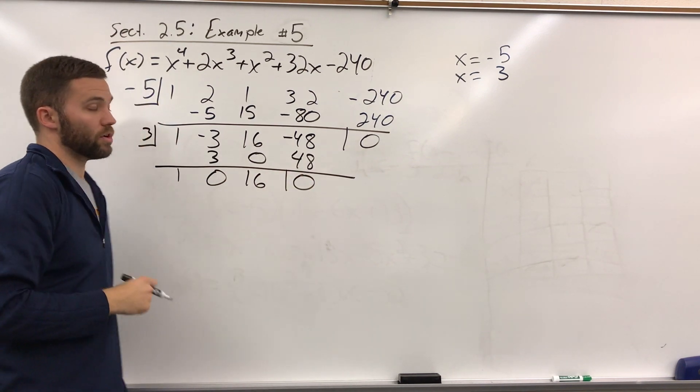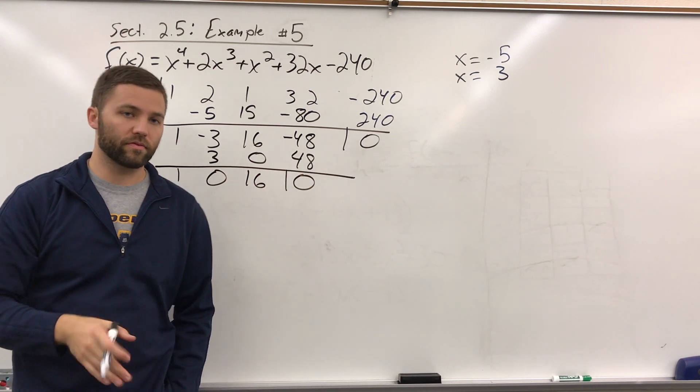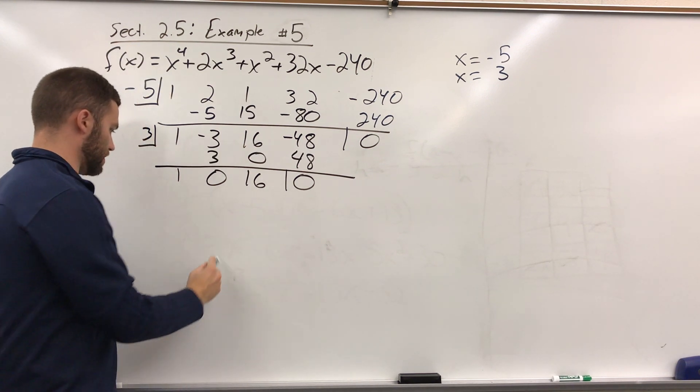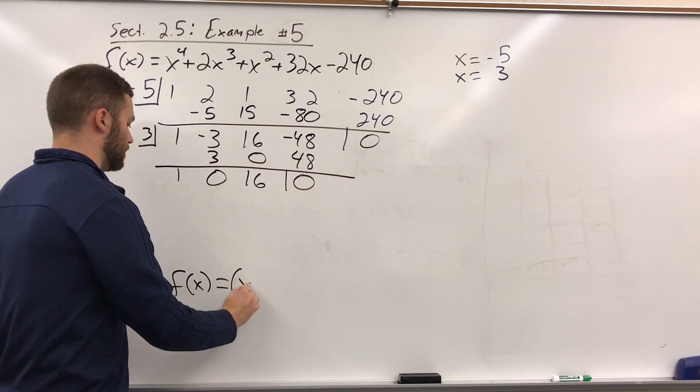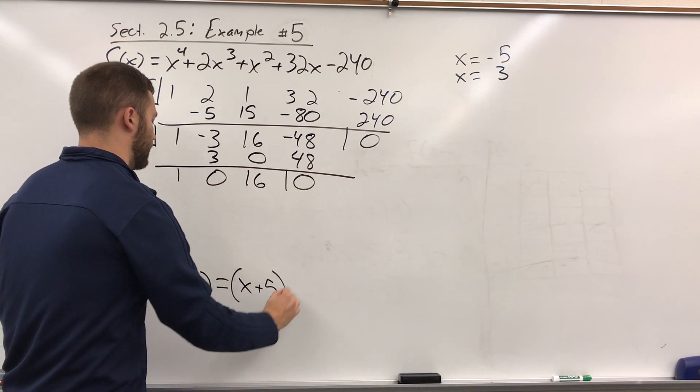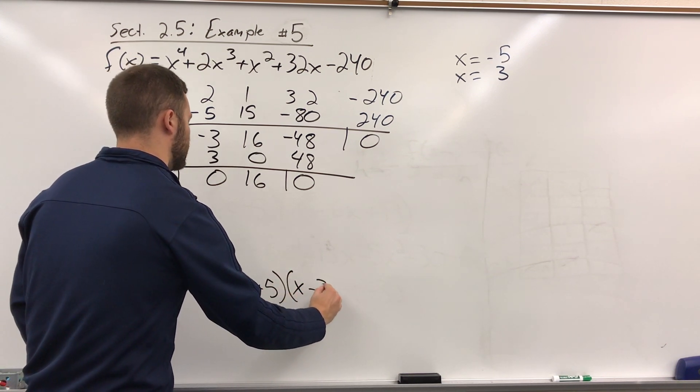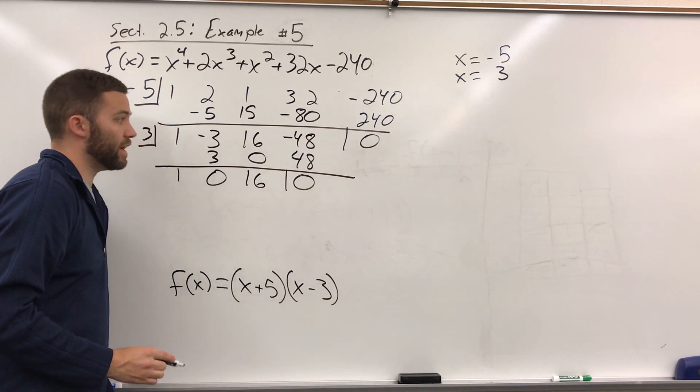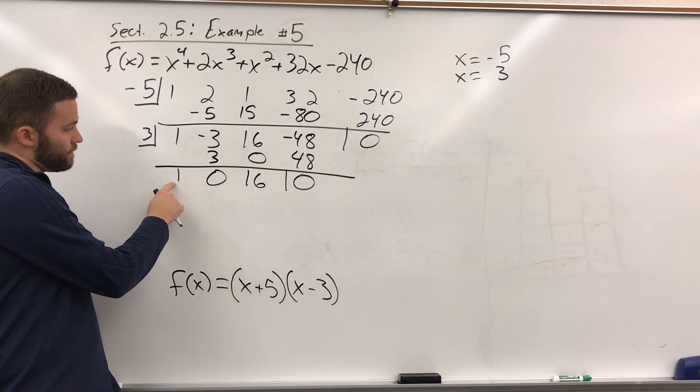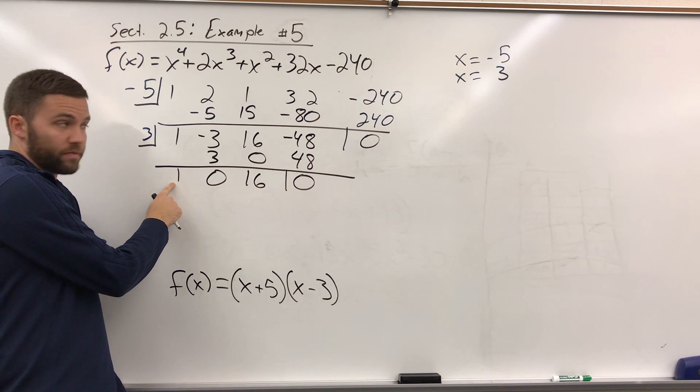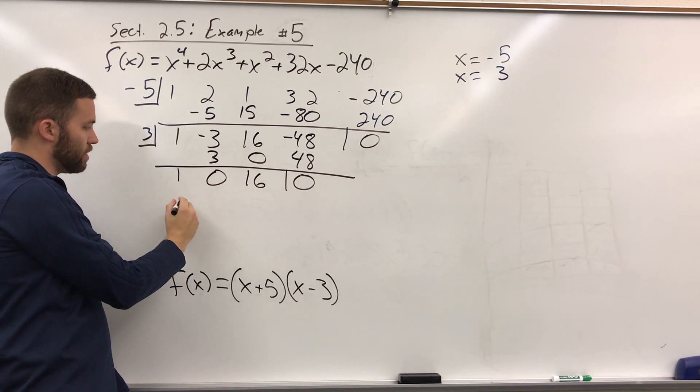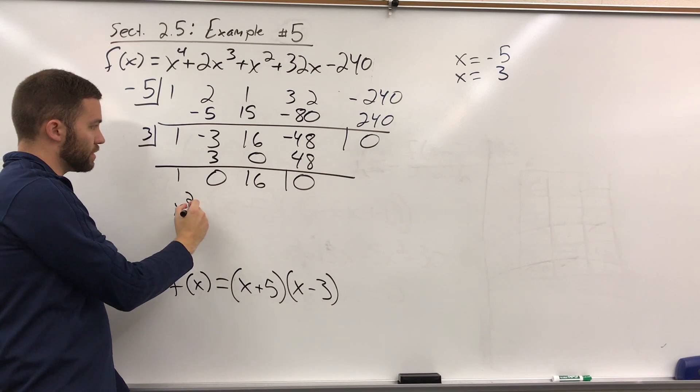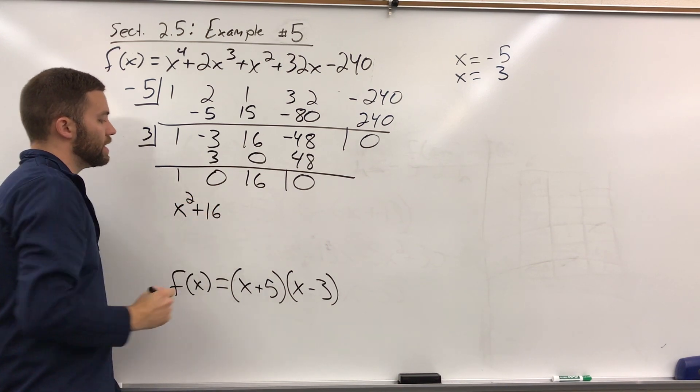So I started off with a 4th degree polynomial. Let's write down what we know at this point. So at this point, we know f of x is equal to x plus 5 times x minus 3. And then at this point, this is a quadratic, because we started off at a 4th power, we did division once, did division again, we're at a 2nd power, so the other factor is x squared plus 16.